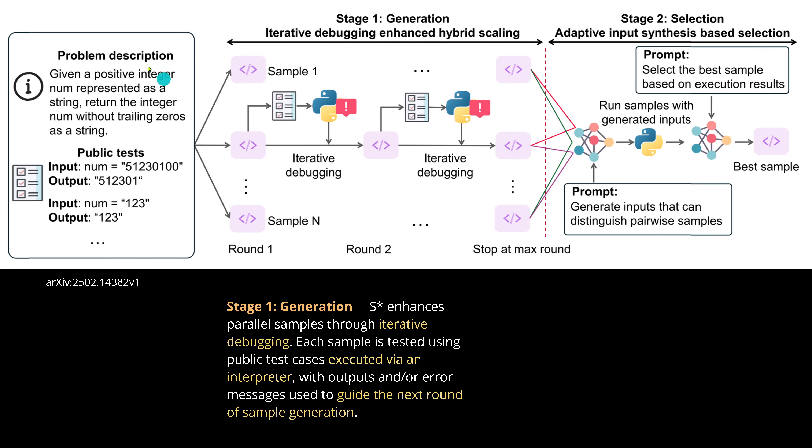In stage number one, we have a problem description: given a positive integer number represented as a string, return the integer number without trailing zeros as a string. We have some public tests. Now what S-Star does in stage one is it generates parallel samples. S-Star enhances the parallel samples with iterative debugging. This is the beauty with code - with a debugger we immediately see where's the mistake. Each sample is tested using public test cases executed via an interpreter, with outputs and error messages used to guide the next round of sample generation.